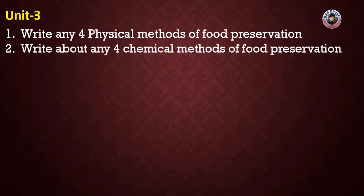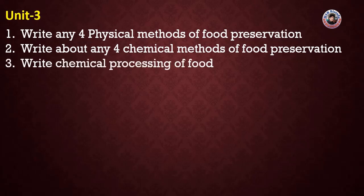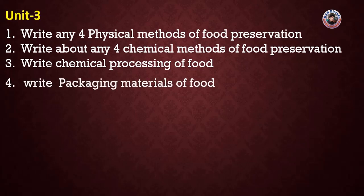Coming to Unit 3 — Second question: Write about four chemical methods of food preservation. Third question: Write about the chemical processing of food — chemicals are used to process food. Fourth important question: Write about packaging materials of food.